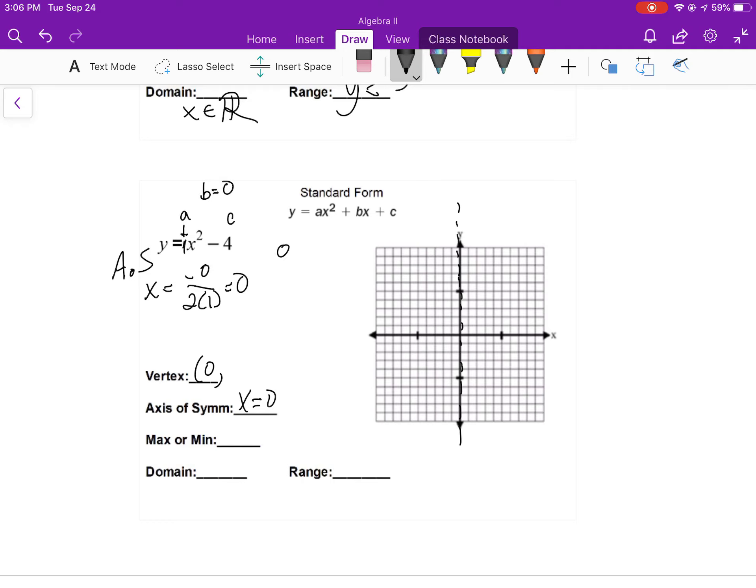And if I put 0, square that, minus 4. 0, negative 4 is my vertex.